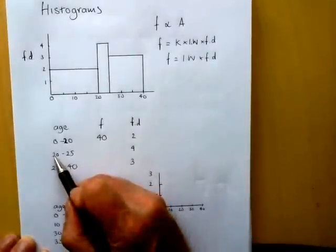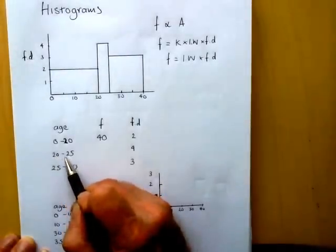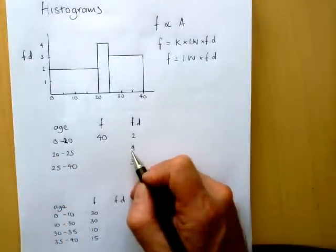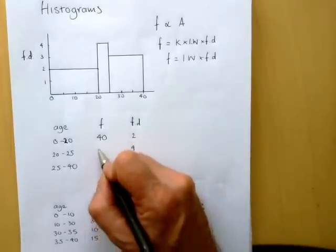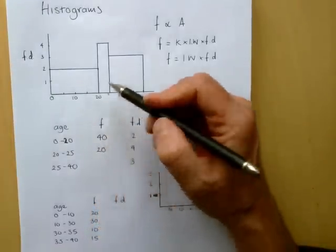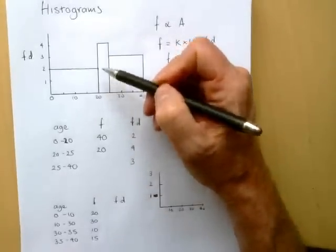The next interval width is 20 to 25. That's a width of 5. The frequency density is 4. So this has a frequency of 20. So half the frequency, and this has half the area.